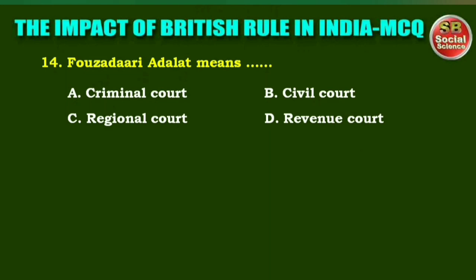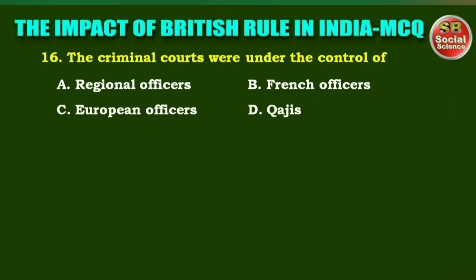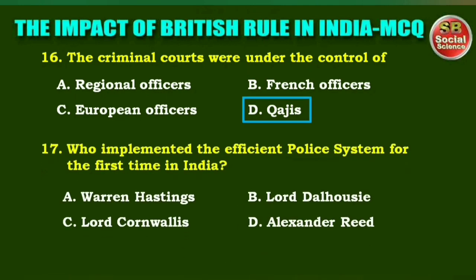Next question: Fauzudari Adalat means — options are: criminal court, civil court, regional court, revenue court. The right answer is option A: criminal court. Next one: Civil courts came under the administration of — Indian officers, French officers, European officers, regional officers. The right answer is option C: European officers. Next question: The criminal courts were under the control of — regional officers, French officers, European officers, Qazis. The right answer is option D: Qazis.